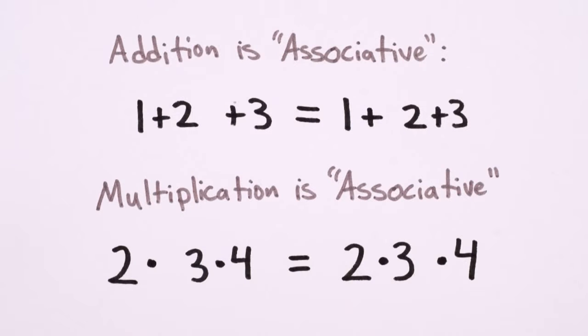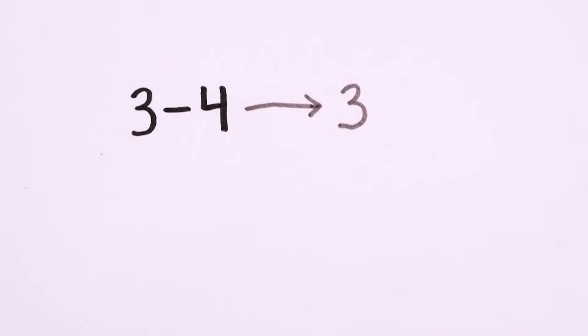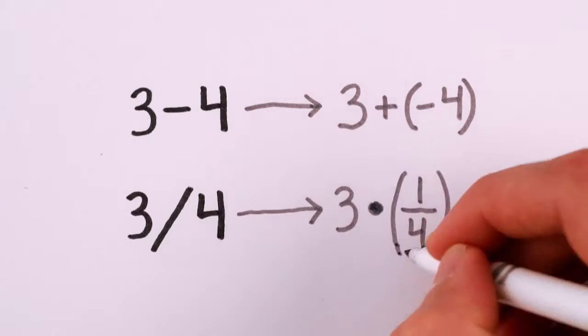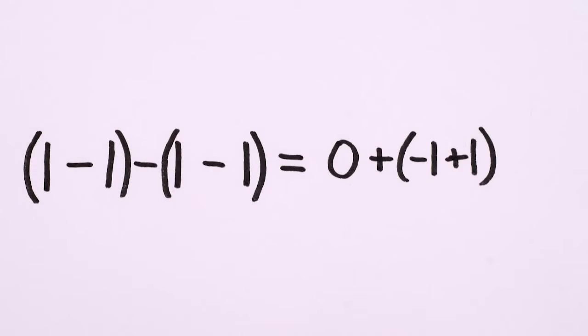But the point is that those parentheses are still there, still implied, just like how 3 minus 4 is secretly implying 3 plus negative 4, and 3 divided by 4 is really 3 times 1 fourth. But any time the result might be ambiguous, you really need to use parentheses. Then you can proceed in whatever order you want.